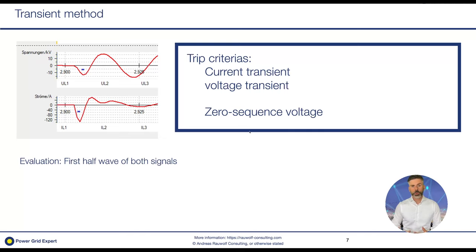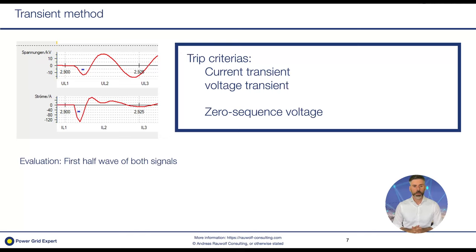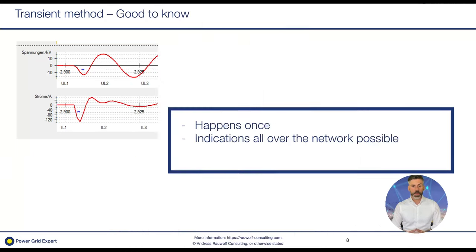Sometimes an additional criterion is added to filter out pure transient earth faults not followed by a static earth fault. For example, in an overhead network a bird or a tree branch may cause a brief transient. Some operators may not want any indication for that since it's not a static earth fault. We can filter out these pure transient faults by checking whether a 50 Hz zero sequence voltage is present after the transient. As a summary, this is quite a stable method.